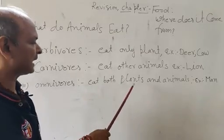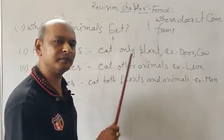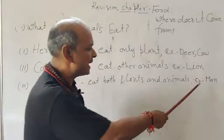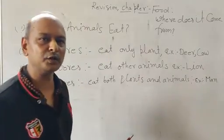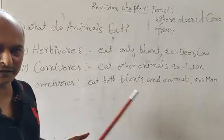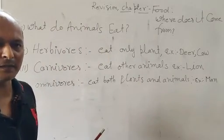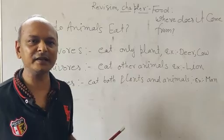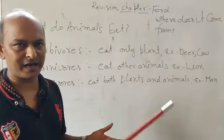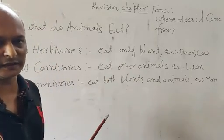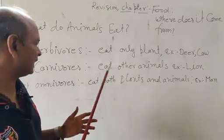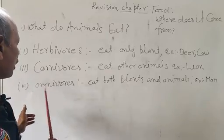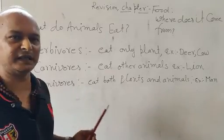The third category is Omnivores — those animals which eat both plants and animals. An example is humans. We use both meat and plant-based food, so we are omnivorous.